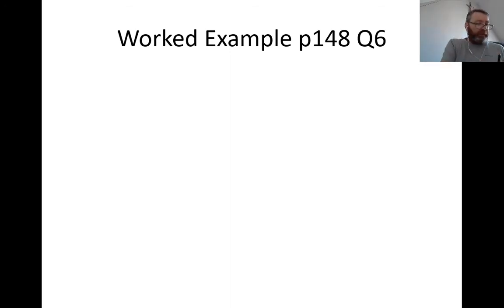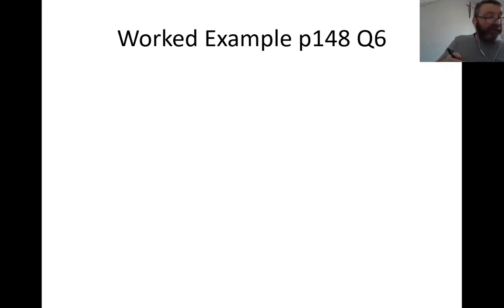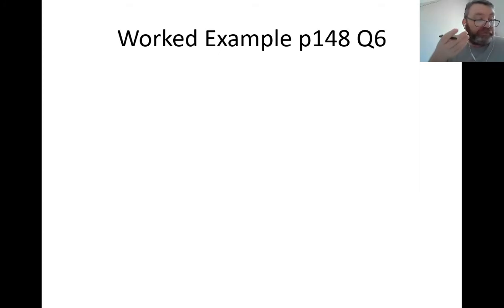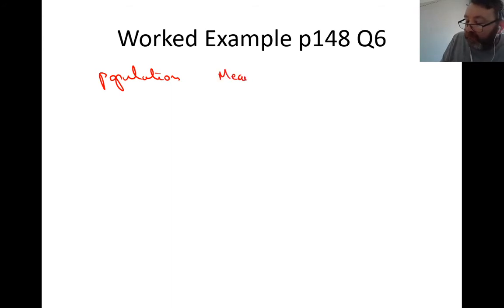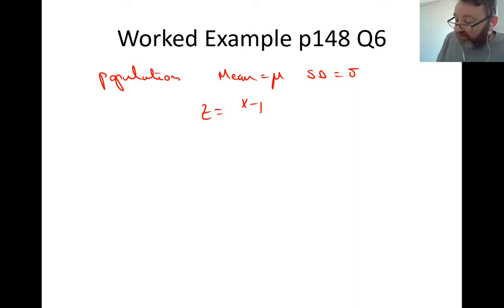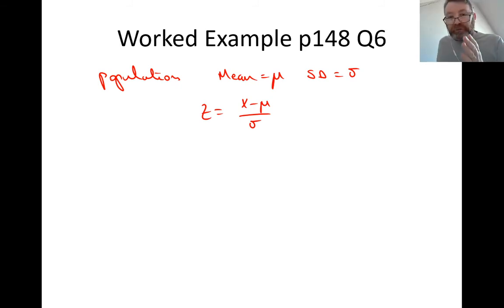Page 148, question 6. The manager of a hotel finds that guests spend a mean of 12.5 minutes each day in the shower. Assume the shower times are normally distributed with a standard deviation of 2.8 minutes. Part one: find the percentage of guests who shower for more than 13 minutes. Because we are told about all the guests, we are dealing with a population. So the mean is μ = 12.5 and the standard deviation is σ = 2.8, and the z-score formula is z = (x − μ)/σ.